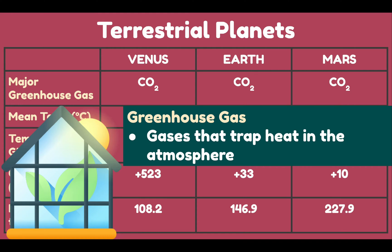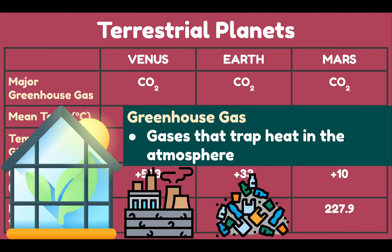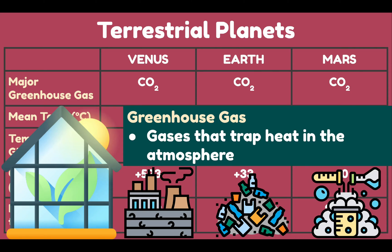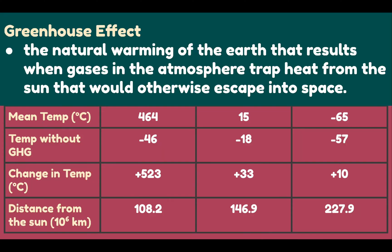Carbon dioxide enters the atmosphere through burning of fossil fuels, solid waste, trees, and other biological matter, and also as a result of certain chemical reactions. Greenhouse gases lead us to the greenhouse effect — the natural warming of the Earth because of greenhouse gases. The average temperature on Earth is 15°C. Without greenhouse gas, it would be −18°C, which is not conducive for survival. Because of the warming effect of greenhouse gases, we are able to live on Earth. So greenhouse gases are not undesirable — without them, Earth would not be habitable.